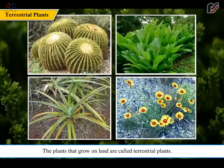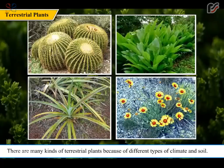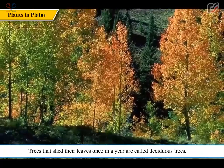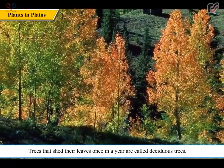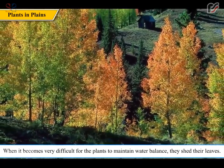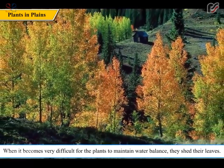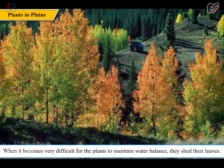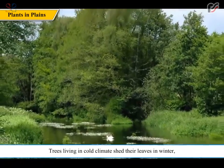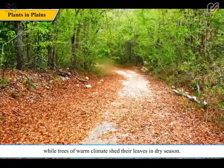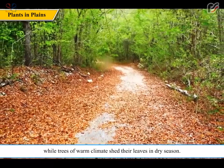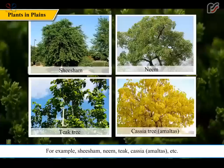The plants that grow on land are called terrestrial plants. There are many kinds of terrestrial plants because of different types of climate and soil. Trees that shed their leaves once in a year are called deciduous trees. When it becomes very difficult for the plants to maintain water balance, they shed their leaves. Trees living in cold climate shed their leaves in winter, while trees of warm climate shed their leaves in dry season. For example, Shisham, Neem, Teak, Kaishya, Amaltas, etc.